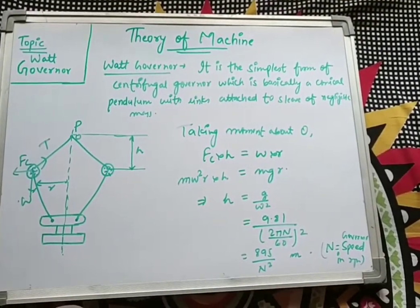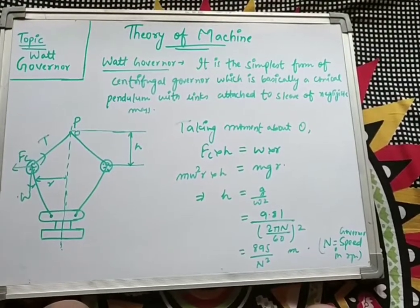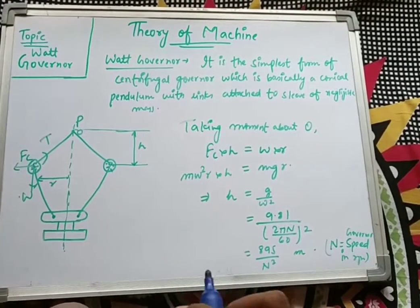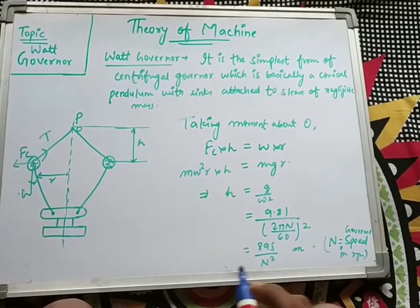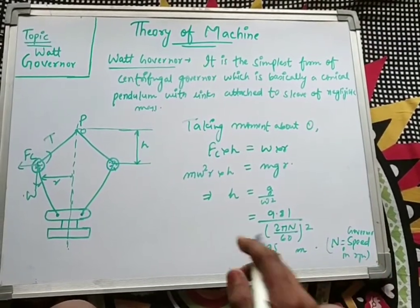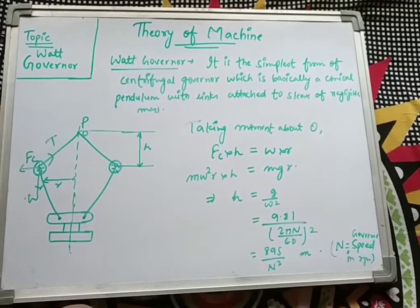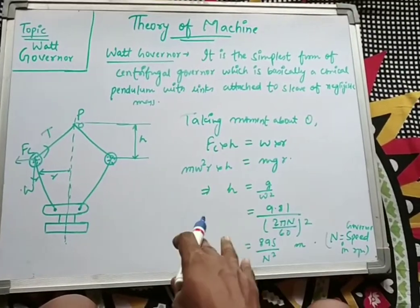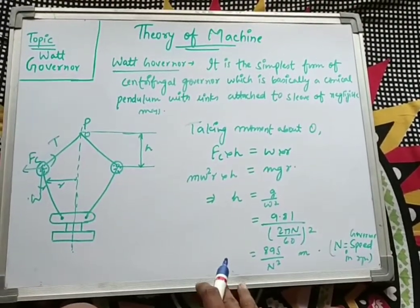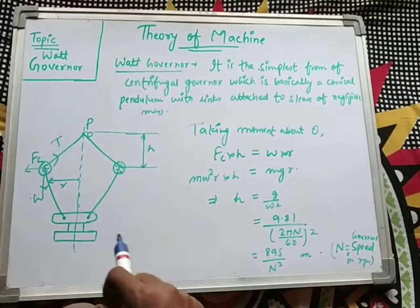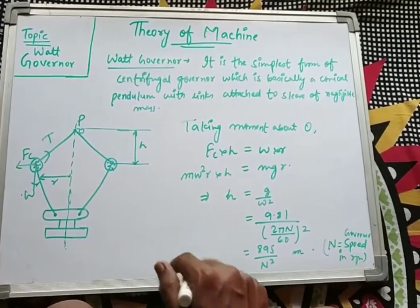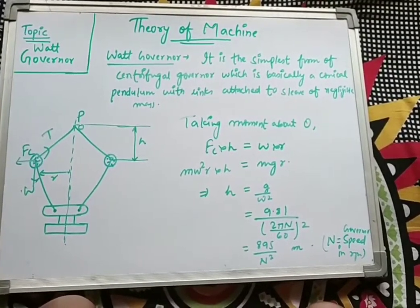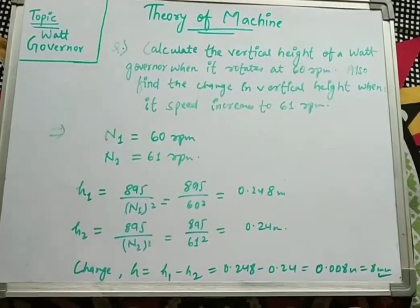So for calculating the height of a Watt governor, we simply require the governor speed N. If we know the governor speed, we apply this formula to calculate the height. I hope you understand this whole mechanism and solution. If you have any query, you can ask in the comment section or contact me by call or WhatsApp.